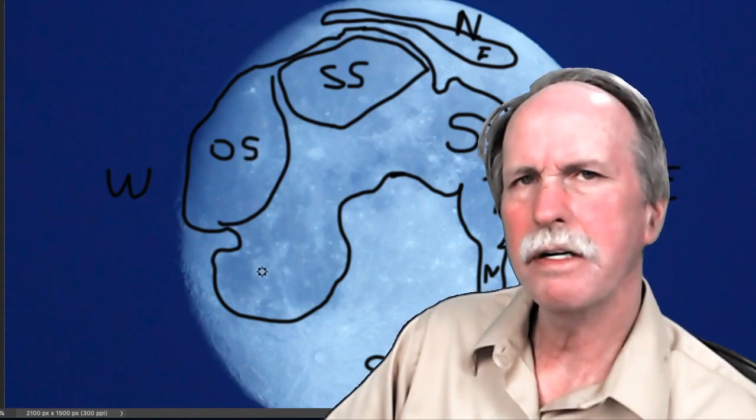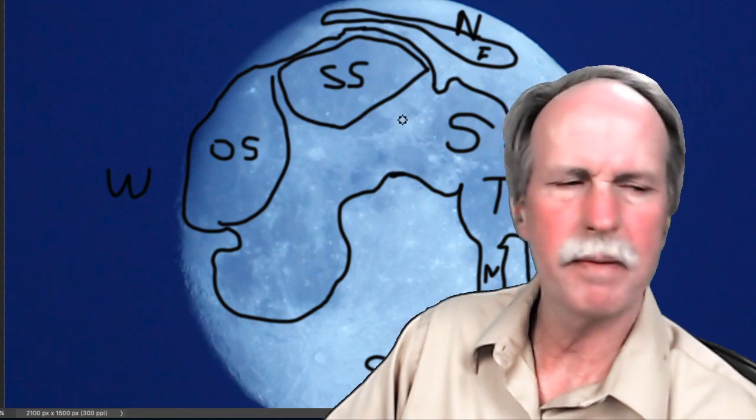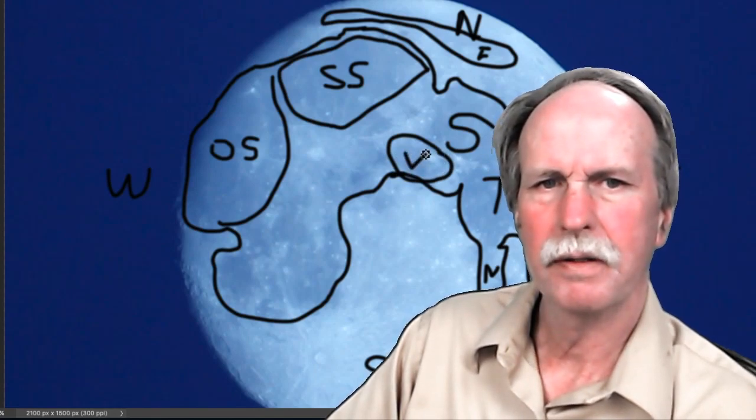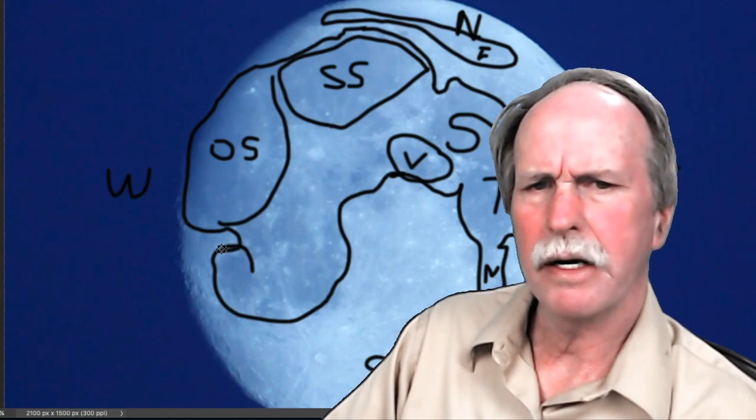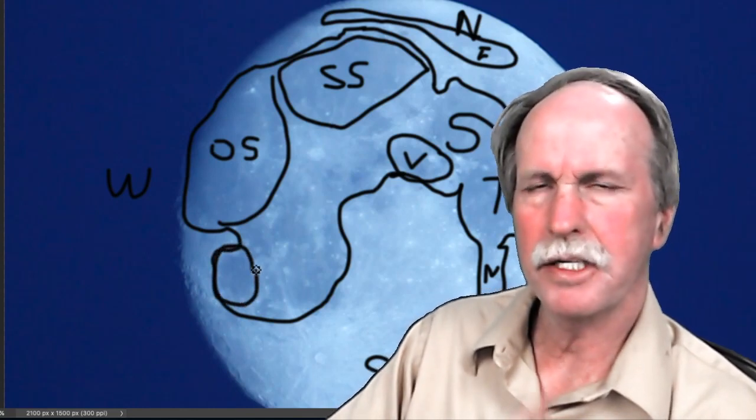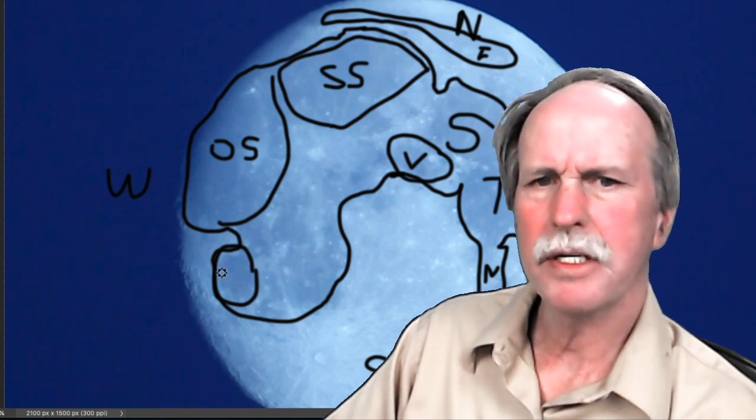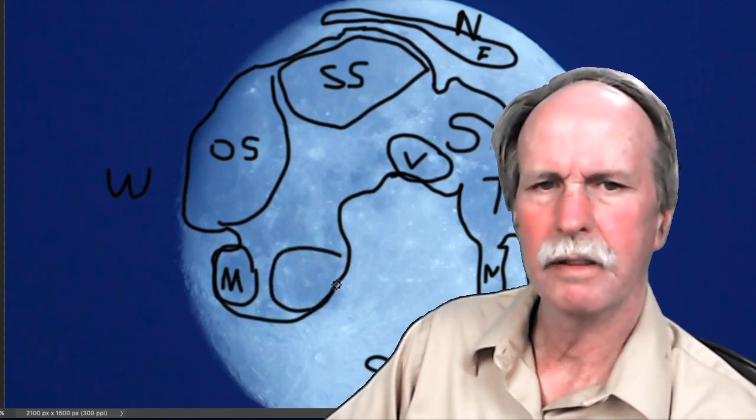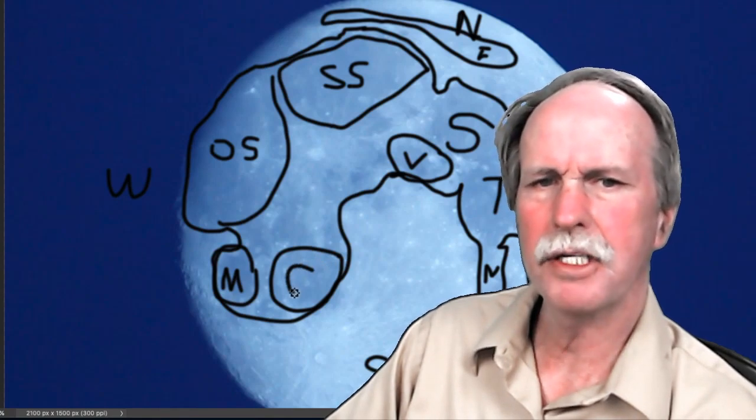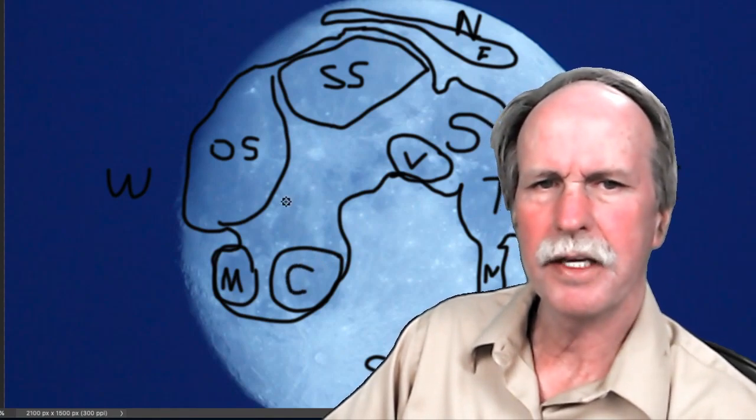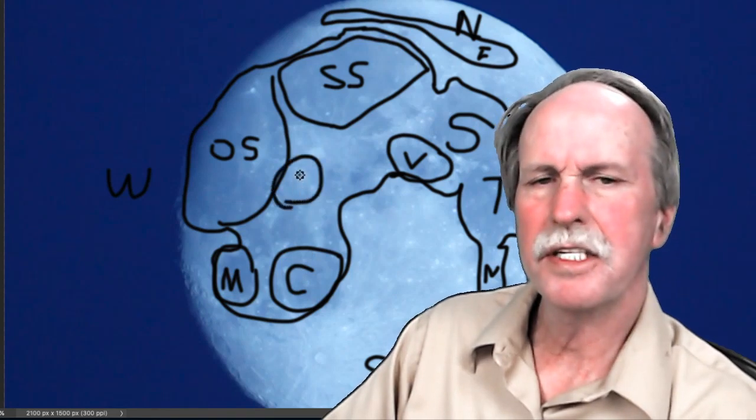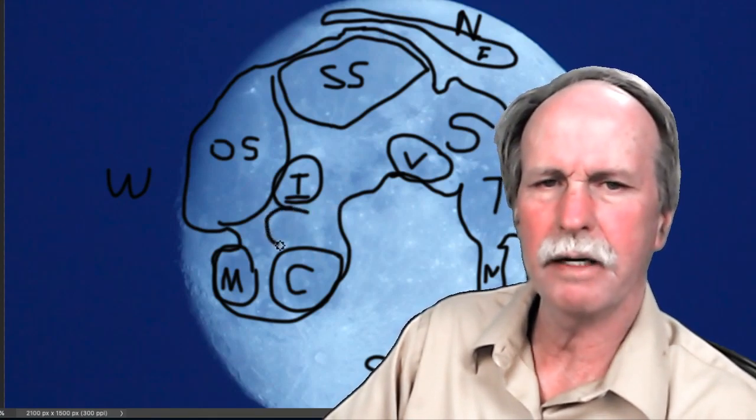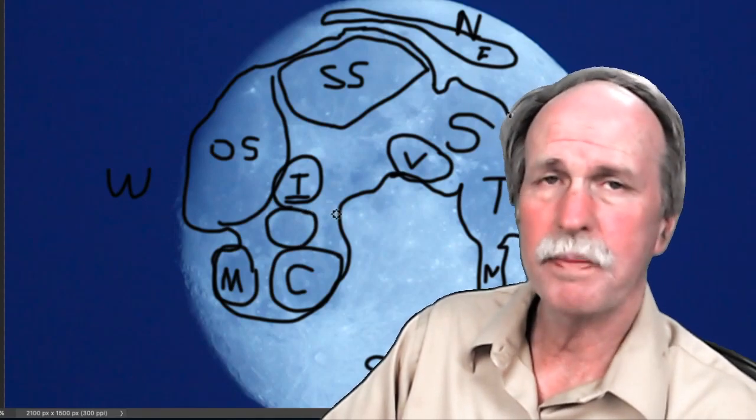Now in this area we have a series of small or minor seas. This area in here is called the sea of vapors. This round area that kind of looks like the sea of crisis which is behind my head is known as the sea of moisture. Likewise this area over here is called the sea of clouds and this area up in here is known as the sea of islands. Apparently they started running out of names so they called this area right here the sea that has become known.